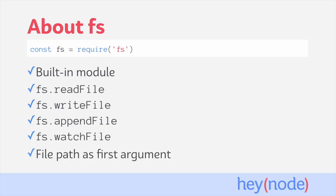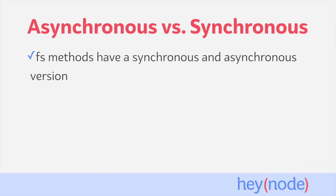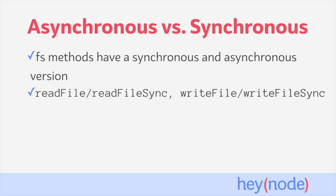All these methods have different functions and options that can be passed to them, but one of their main similarities is that they all take a file path as their first argument. Most fs methods have a synchronous version and an asynchronous version. The default is the asynchronous version, which takes a callback. The synchronous versions are marked by adding sync to the name of the method. For example, the asynchronous readfile function has an equivalent synchronous version called readfilesync. The same goes for writefile and writefilesync.